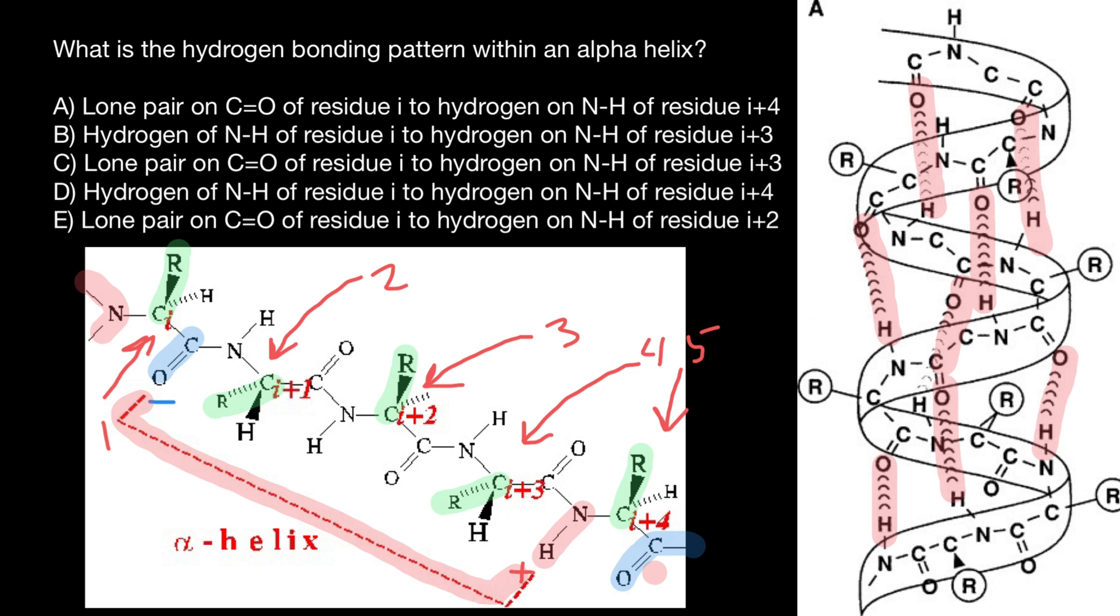According to this picture, for example, amino acid number two, its carboxyl group, is going to make hydrogen bond with amino acid four amino acids downstream. So with the amino group of the sixth amino acid.